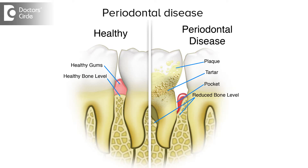Causes of loose teeth may be a secondary trauma in an adult or a periodontal disease. Many people come in with loose teeth. The main cause behind this is plaque. Plaque is nothing but a bacterial film found on your teeth because of poor oral hygiene.